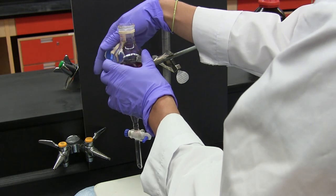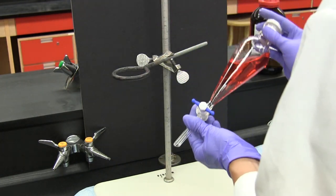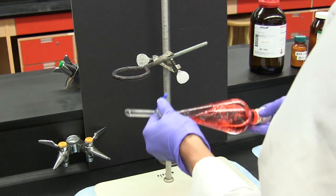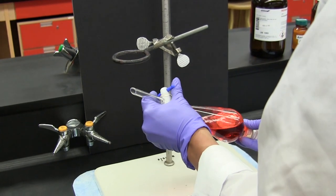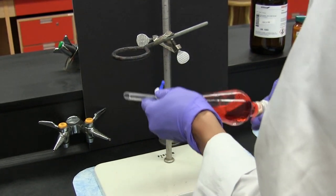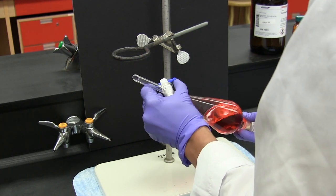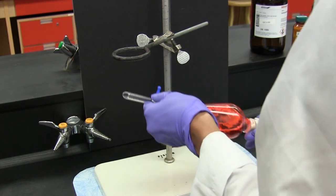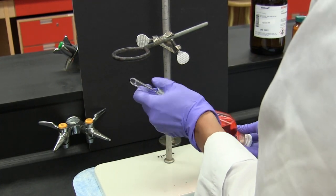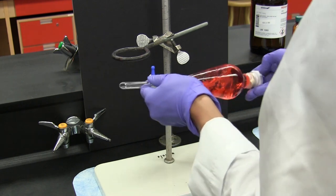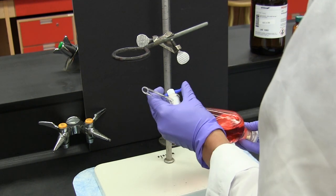The stopper is now placed in the neck of the sep funnel. It's important for you to not allow the stopper to fall out at any time while you are handling the apparatus. Hold the stopper with one hand and carefully invert the apparatus. Now gently shake the sep funnel while periodically opening the stopcock to relieve the buildup of pressure. This is repeated several times to ensure that the two layers are thoroughly mixed, allowing the solute to transfer from the water into the dichloromethane.